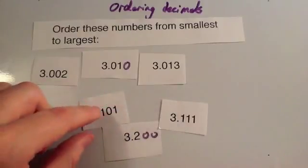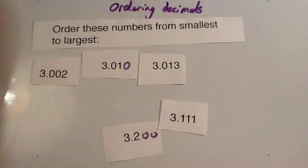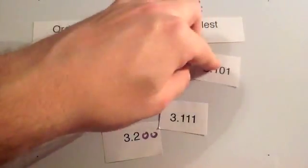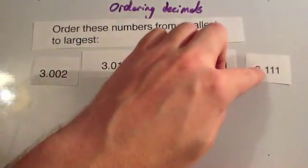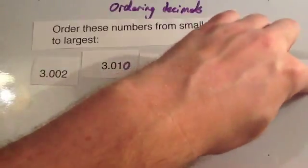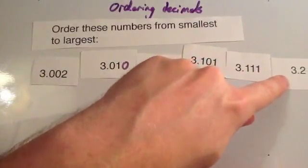Let's see. Then it would be 3.101, sorry, 3.101. And then 3.111, and finally 3.200.